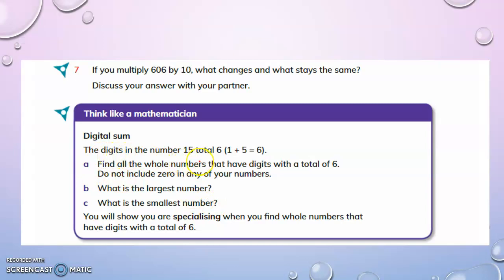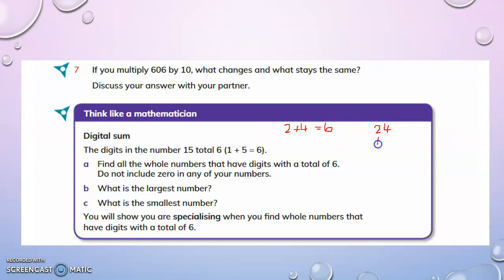The digits in the number fifteen total six — that is five plus one equals six. Find all whole numbers that have digits with a total of six, not including zero in any number. So when you add the digits of a number you should get six. For example, one and five add to six giving us fifteen. Two and four add to six giving us twenty-four and forty-two. Five and one give us fifteen and fifty-one.